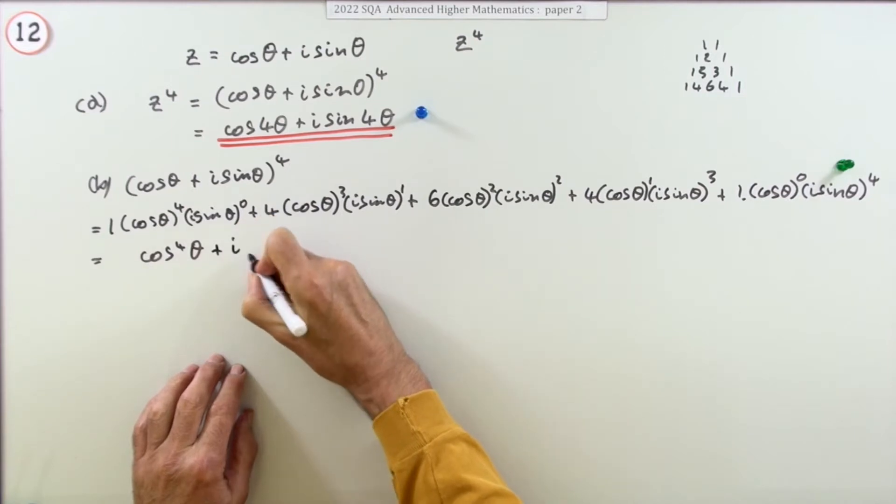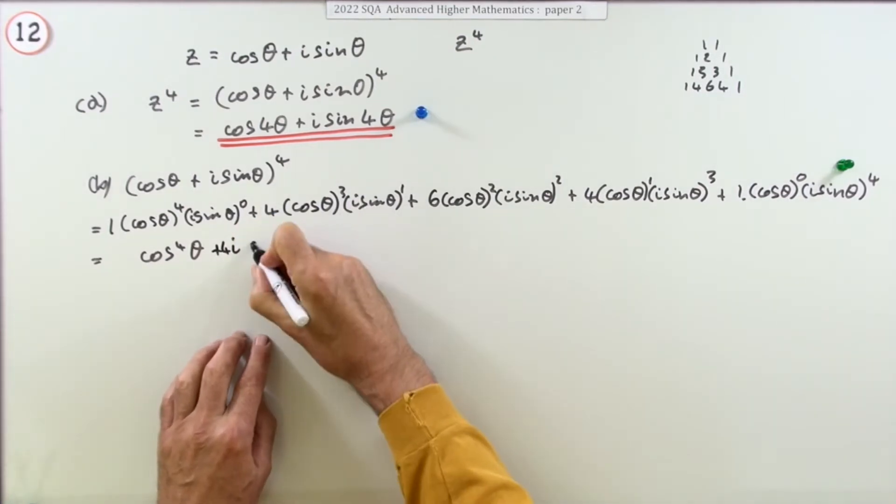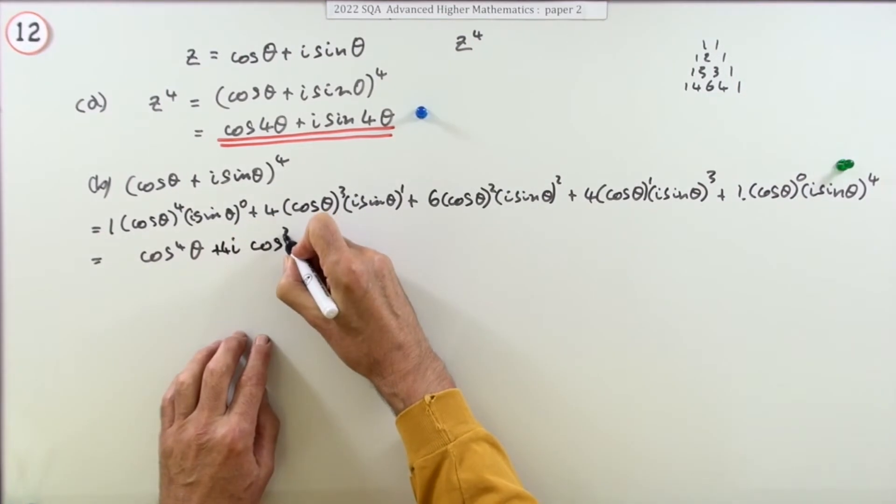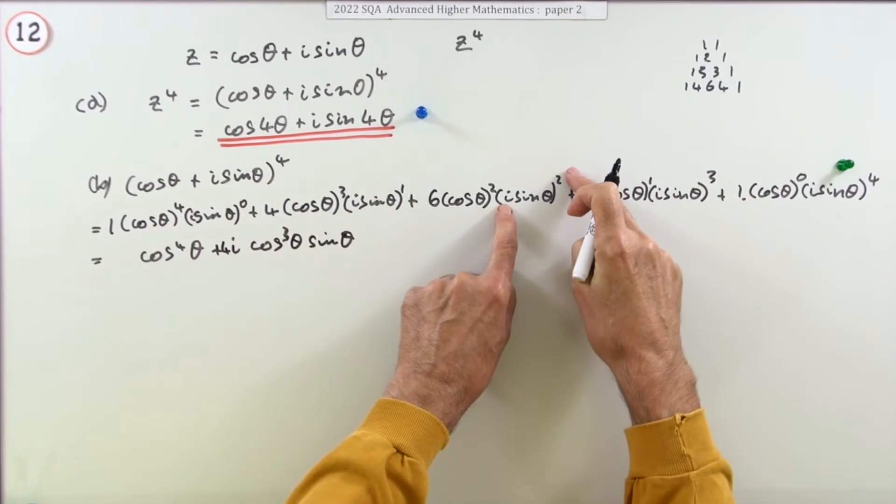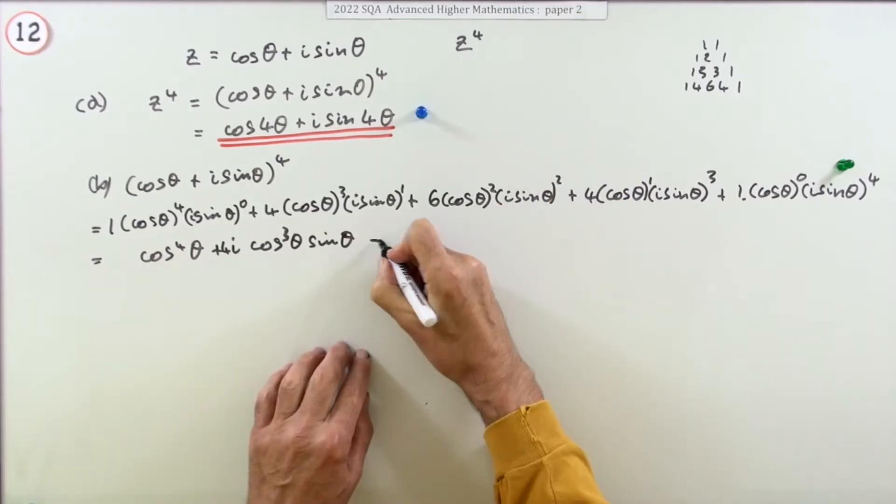Now the next one, the coefficients, it's just power 1 so it's just an i, so it's going to be plus 4i cos cubed theta sine theta.